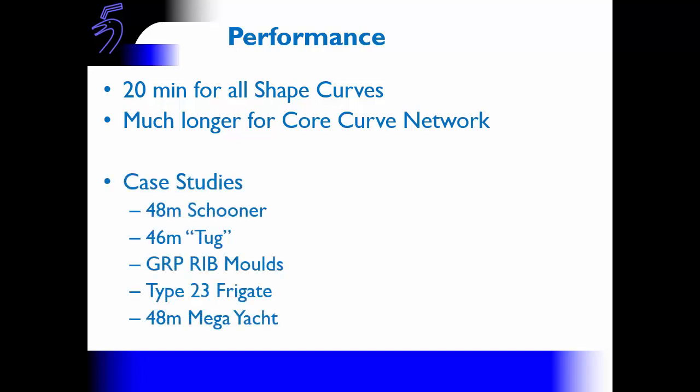A number of case studies have been done using this technique. One case looked at creating the hull definition for a Type 23 frigate. This was an interesting case study because it was done in a commercial environment by people who had to learn the software. This was the first time we encountered the need to validate the surface properly — the validation was needed not only so that you knew whether the surface was accurate, but so you had the information to communicate the level of accuracy to management and to the customer. Subsequently the project involving the 48-meter megayacht was the first to actually use the validation process during the generation of the hull form, meaning validation drove the accuracy of the surface.